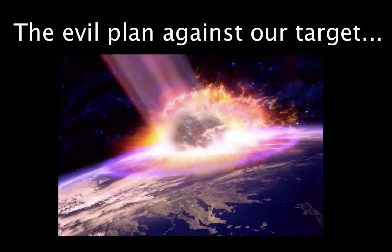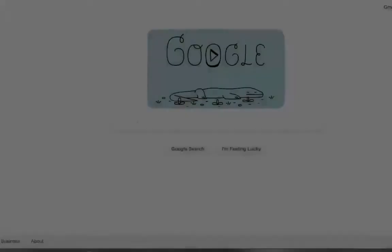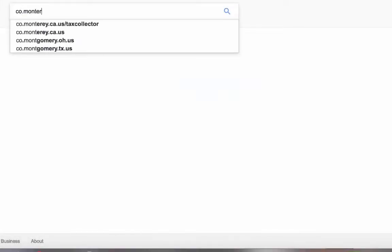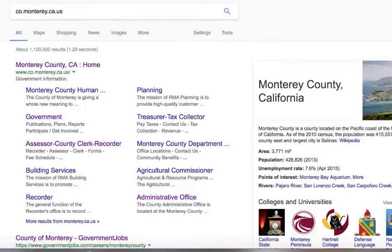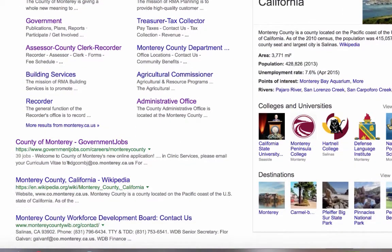Our evil plan against our target is to try to find out as many email addresses as we can on the internet, because in this instance email addresses are also account names. Then we're going to try to guess those passwords using Office 365, and if we do, we'll get full access to their accounts. Let's go to Google and harvest some accounts. If we simply put our domain name in Google, immediately we see some email accounts without even having to visit any websites.